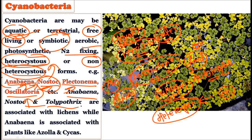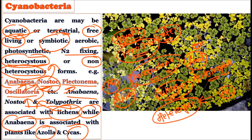Anabaena, Nostoc, and Tolypothrix are associated with lichens. They are also associated with plants like Azolla and Cycas. The Anabaena-Azolla relationship is one you may have studied — they benefit each other through mutualism. Similarly, we have the relationship between Nostoc and Anthoceros.